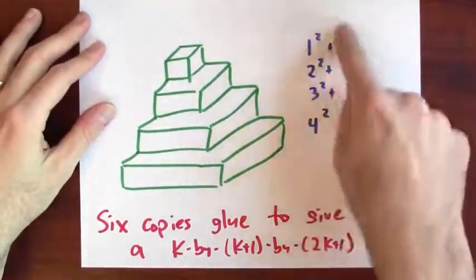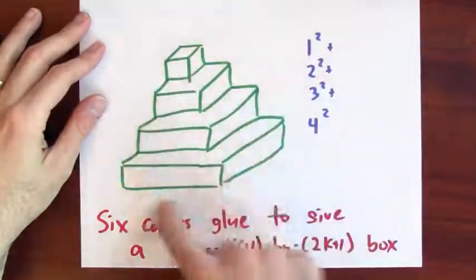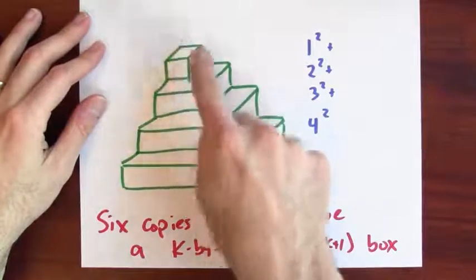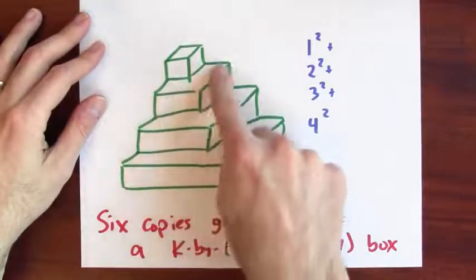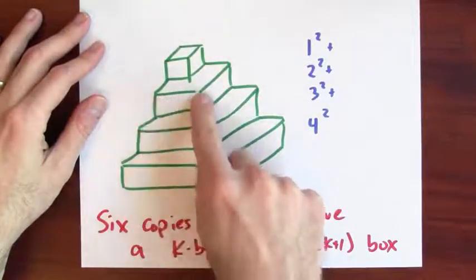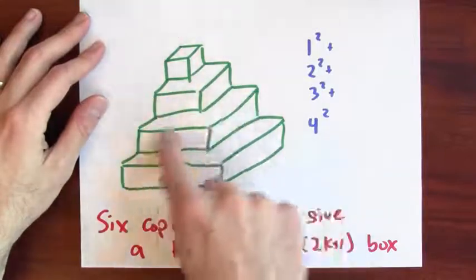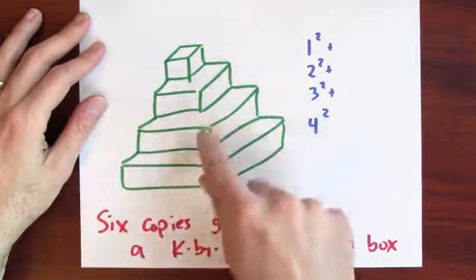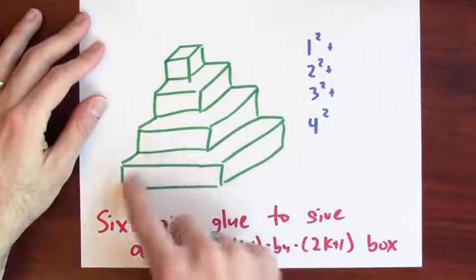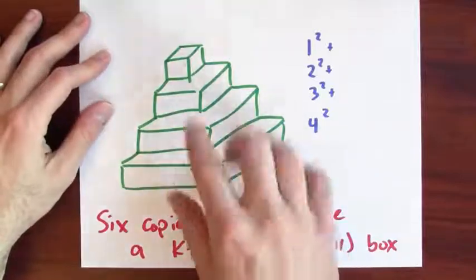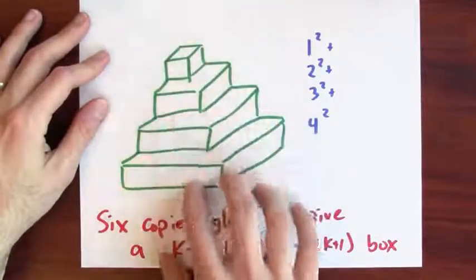I could write down my sum of squares as something built out of little tiny cubelets. Here I've got 1 cube. Underneath I've got 2 squared cubes. But this is a 2 by 2 by 1 block. Underneath I've got 9 little cubes, a 3 by 3 by 1 block. And underneath that I've got 16 cubes, a 4 by 4 by 1 block. And I can imagine this thing is k high.